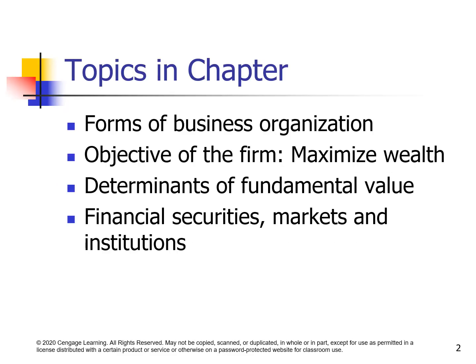The topics in this chapter include forms of business organization, objective of the firm — maximizing shareholders' wealth — determining fundamental value, financial security, financial market, and institutions.